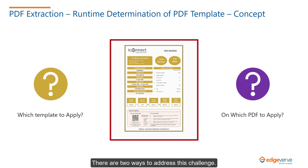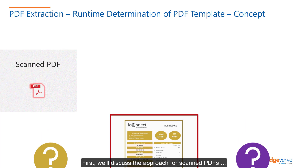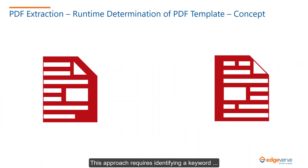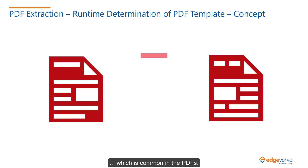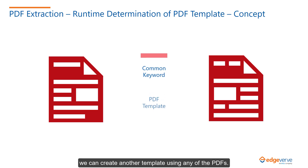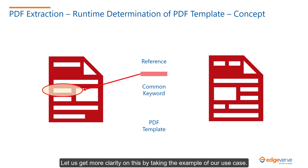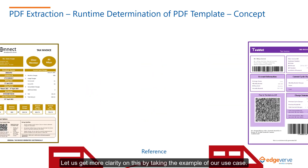There are two ways to address this challenge. First, we will discuss the approach for scanned PDFs which involves creating the reference. This approach requires identifying a keyword which is common in the PDFs. Once we find a common keyword, we can create another template using any of the PDFs. With the common keyword, we will create a reference and extract a particular text in such a way that it will help us identify the type of PDF document.